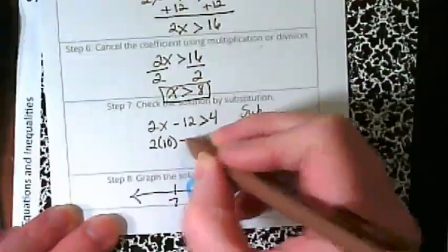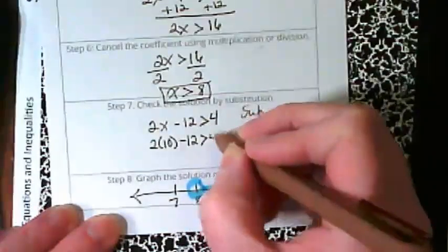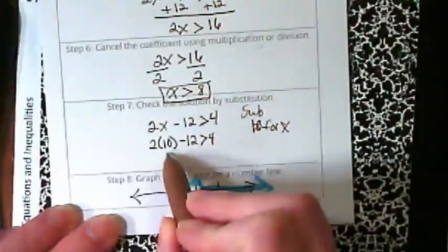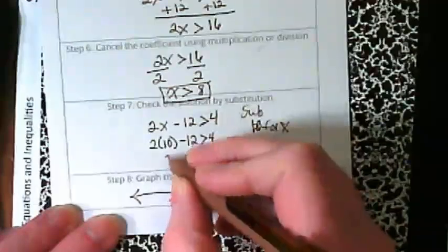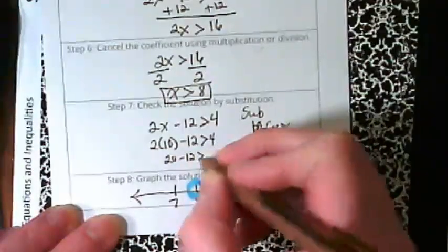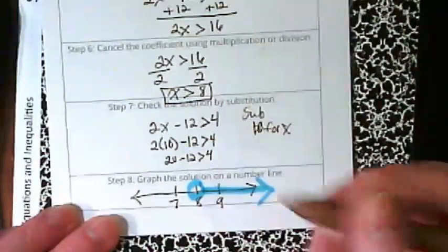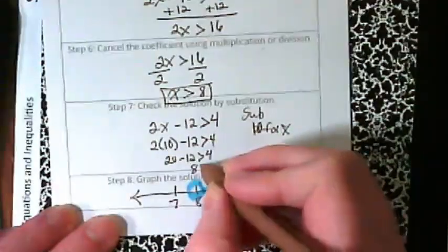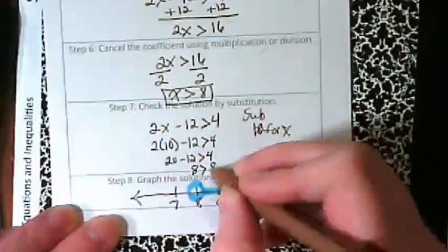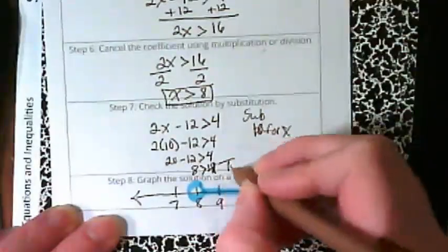So I'm going to rewrite this with a 10 there. 2 times 10 minus 12, we would get 20 minus 12 is greater than 4. What is 20 minus 12? 8 is greater than 4. And so this is true.